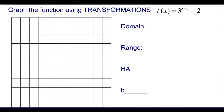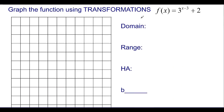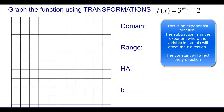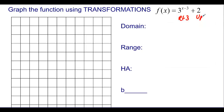Now we want to graph one ourselves. Let's talk about the transformations for 3 to the (x minus 3) plus 2. Normally, 3 to the x looks very similar to the first example we looked at, just a little steeper. When we subtract 3 from x up in the exponent, that means we shift right 3. The plus 2 outside moves it up 2.